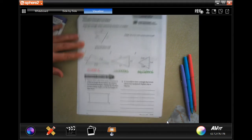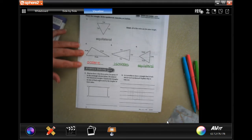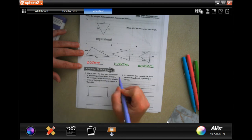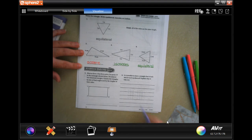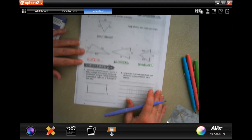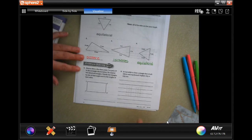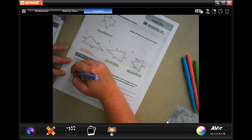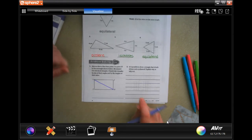All right, Marcus drew a line from point Y to point W on the rectangle shown below. He created two identical triangles. Classify the triangles by their size of their angles and by the length of their sides. So from Y to W, pretty straight, pretty impressive for me.